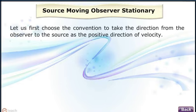Let us first choose the convention to take the direction from the observer to the source as the positive direction of velocity.